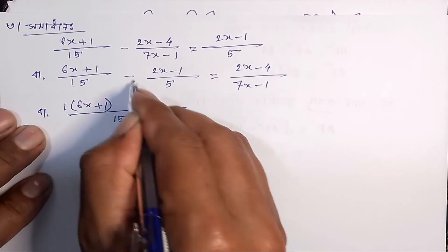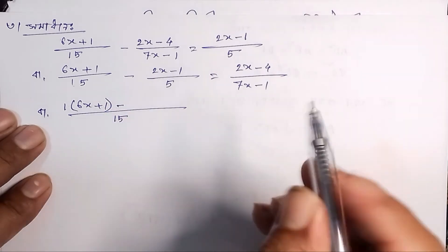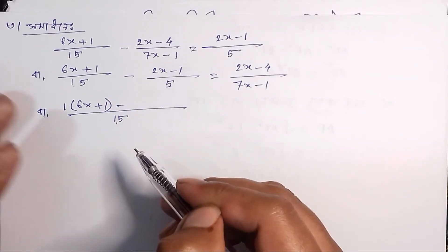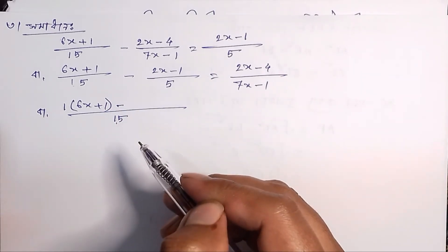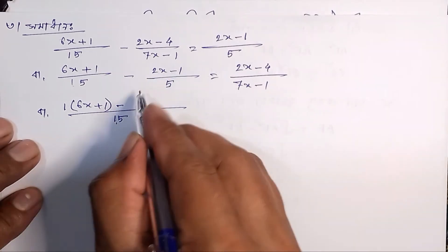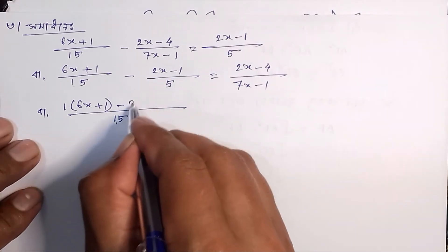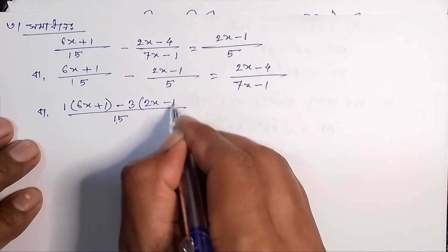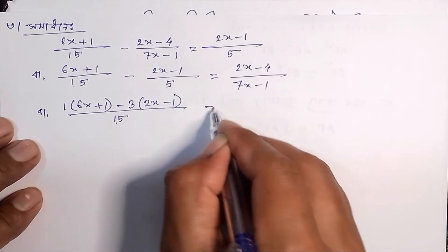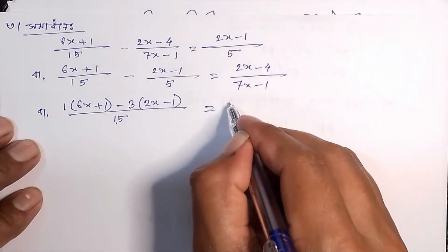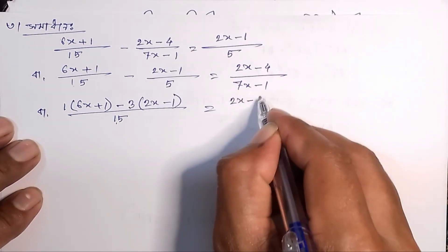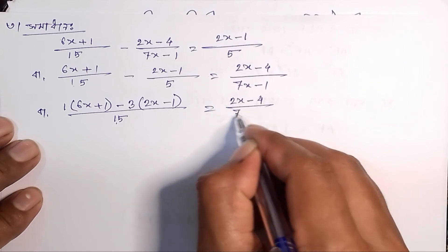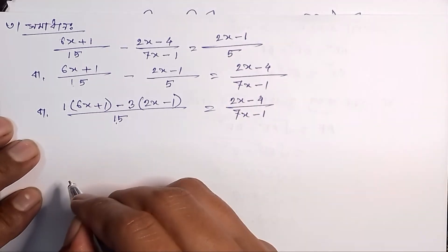Dividing 15 by 5 gives 3, so 3 into (2x-1), giving 3 into (2x-1), is equal to (2x-4) divided by (7x-1).